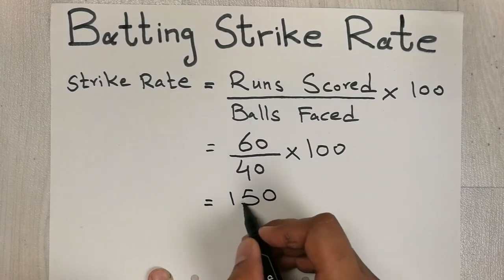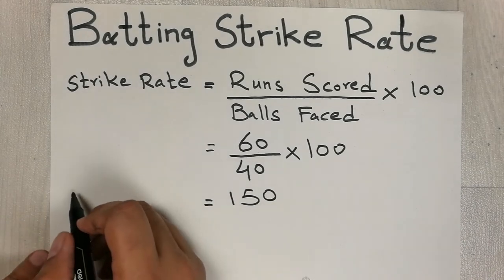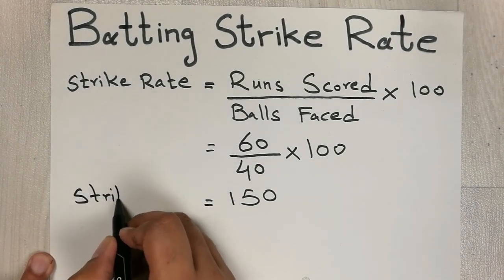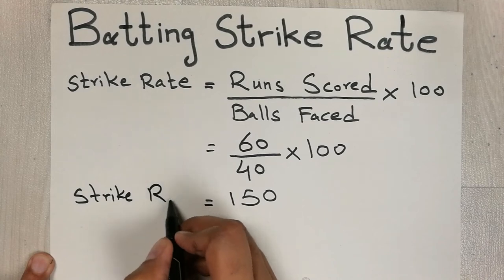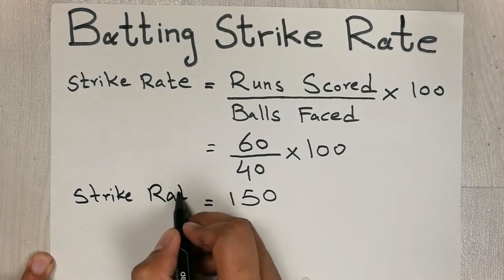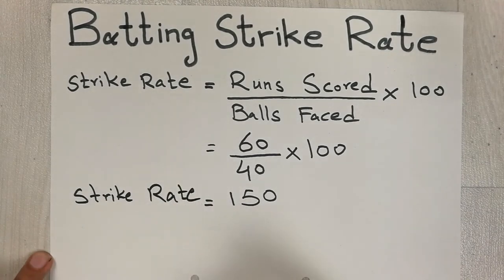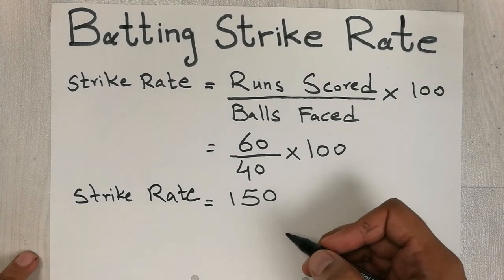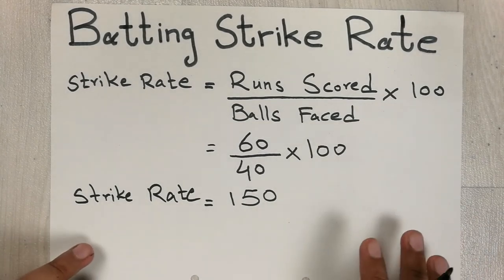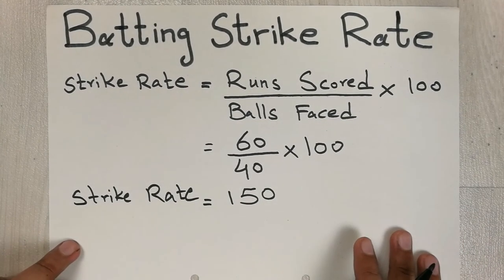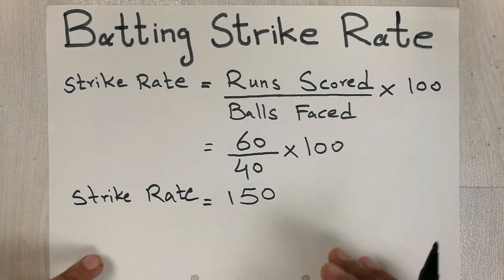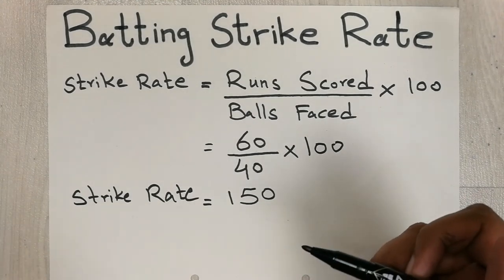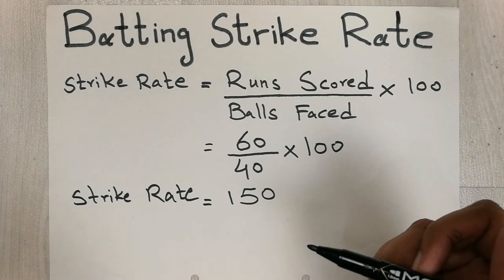When we do that calculation, our answer is 150. So your strike rate is 150. That is how you calculate the batting strike rate in cricket.